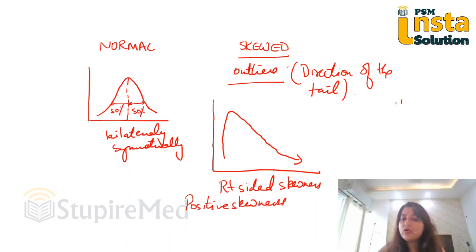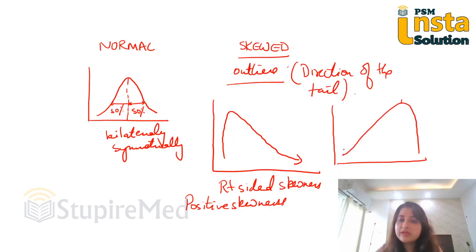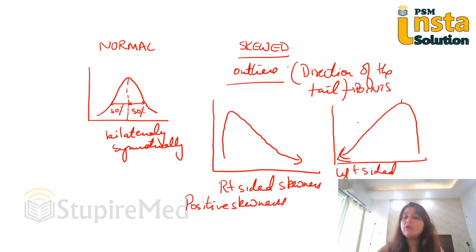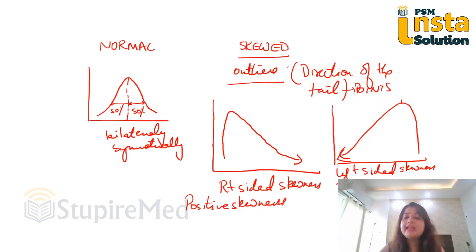And if I draw another diagram like this, and if it is like this, look at the direction of the tail. This is pulling my data to the left side. The direction of the tail — you have to look at which direction the tail points. So here the tail points to the left. So this becomes a left-sided skewness. Left-sided skewness is also known as negatively skewed data.